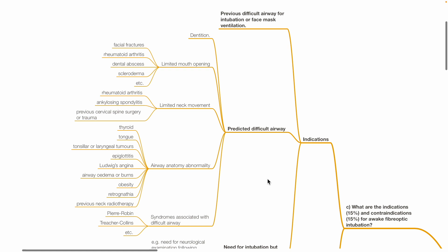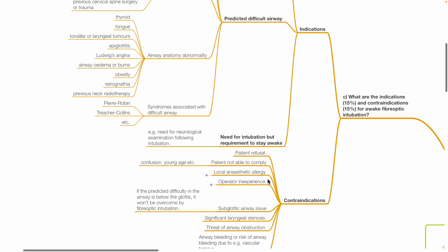Airway anatomy abnormalities may lead to difficult airway such as abnormal thyroid, tongue, tonsillar or laryngeal tumors, epiglottitis, Ludwig's angina, airway edema or burns, obesity, retrognathia and previous neck radiotherapy. Syndromes associated with difficult airway may be present such as Pierre-Robin or Treacher-Collins syndrome. Another indication for awake fibro-optic intubation is need for intubation but requirement to stay awake such as need for neurological examination following intubation.